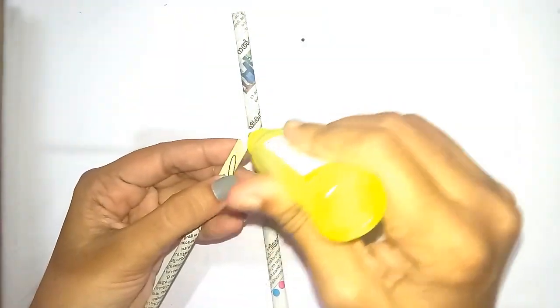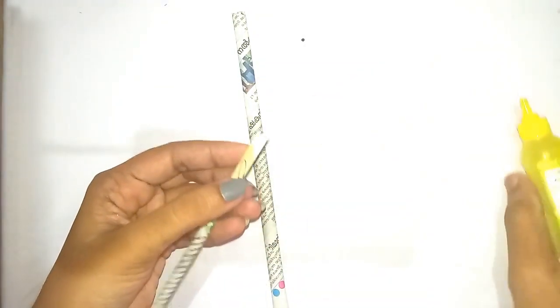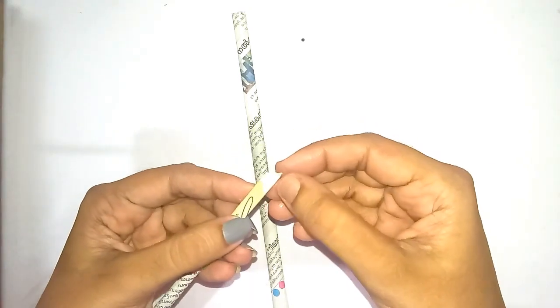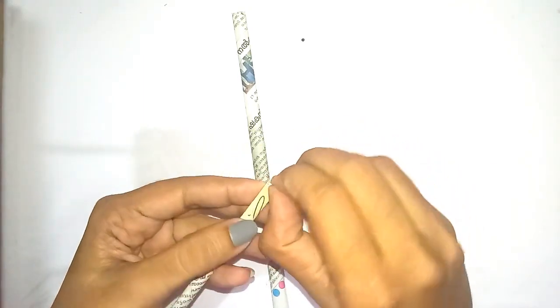Take one piece of paper tube which you have cut and kept. Apply glue on the edges and start rolling that paper tube to make a small paper reel.